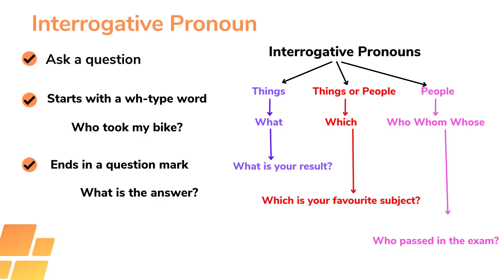The next type of pronoun is the interrogative pronoun. An interrogative pronoun is a pronoun used to ask a question. We know that interrogative pronouns start with a WH-type word and end in a question mark. 'What' is used to ask about things, and 'which' is used to show choice among two. We can see from the chart that 'what' is used for things, 'which' is used for things and people, and 'who', 'whom' and 'whose' are used for people. For example: 'What is your result?' — here 'what' is the interrogative pronoun.